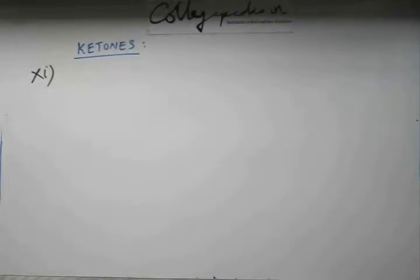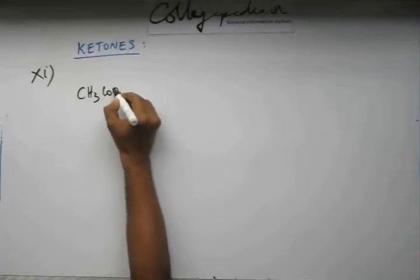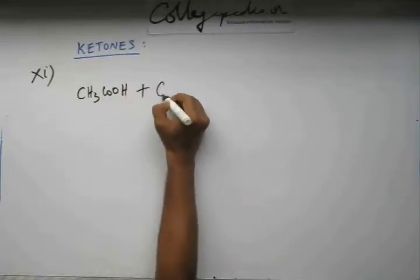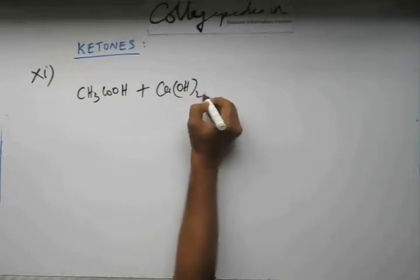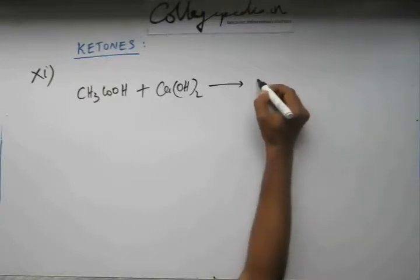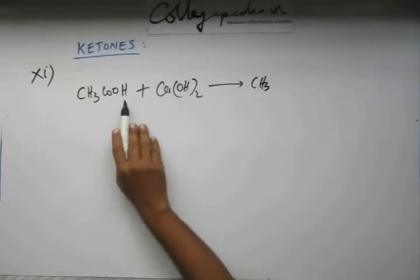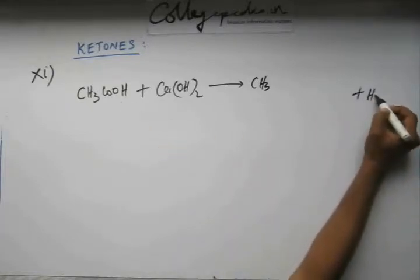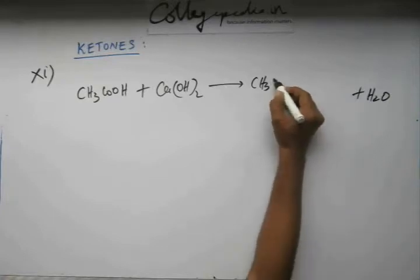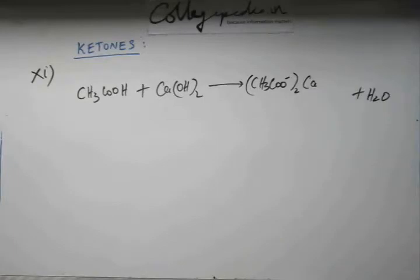Alright, now let's move towards the last reaction that we will be studying for the method of preparation of ketones and aldehydes. In this reaction, suppose we begin with acetic acid and if I add calcium hydroxide to this. This is the acid, this is the base, there will be a simple acid-base reaction and this hydroxide part will abstract hydrogen from here that will result in formation of water and a salt, calcium acetate will be produced.